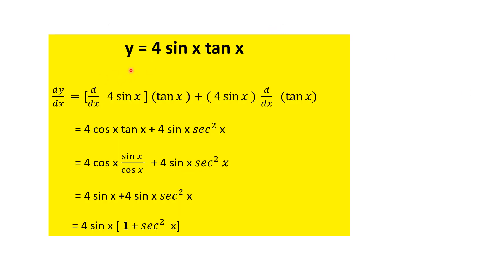Let me take another example: y = 4 sin x · tan x. Again it is the product of two functions. The first function is 4 sin x and tan x is the second function. Applying the product rule: dy/dx equals the derivative of 4 sin x multiplied by tan x as it is, plus 4 sin x as it is multiplied by the derivative of tan x. The derivative of 4 sin x is 4 cos x, and the derivative of tan x is sec²x.